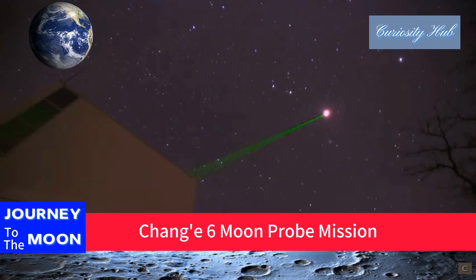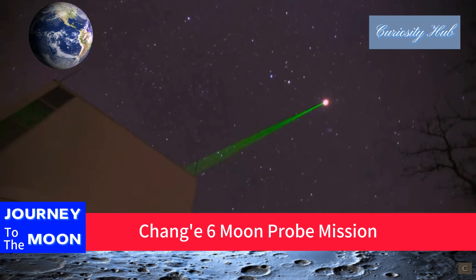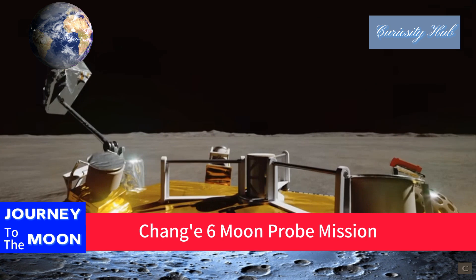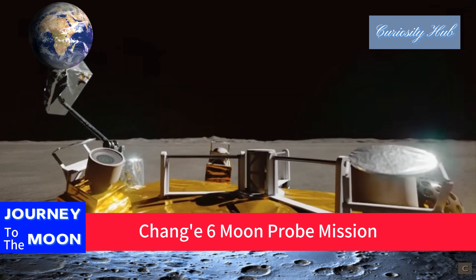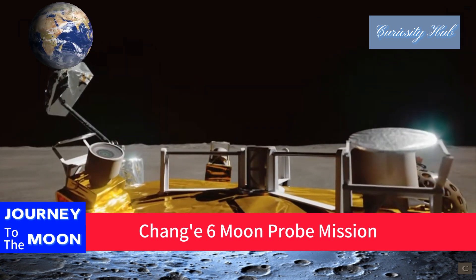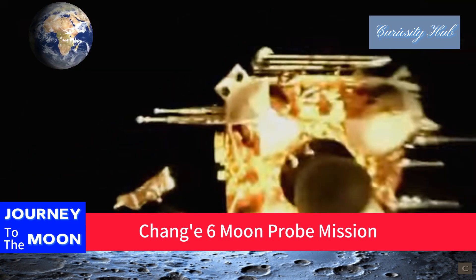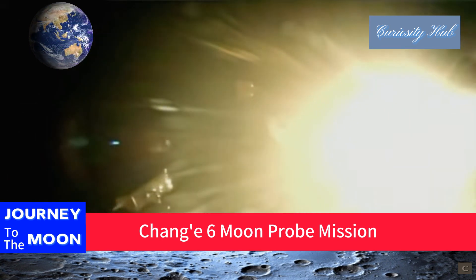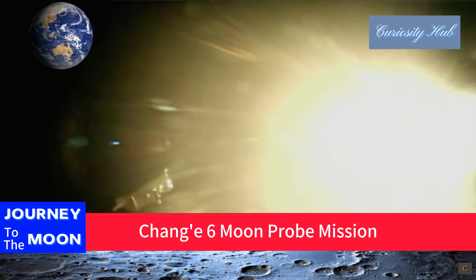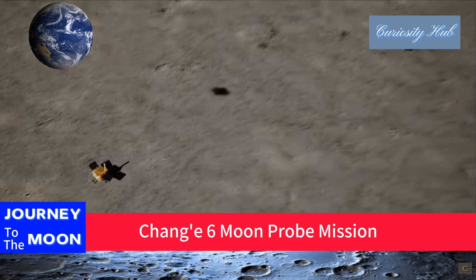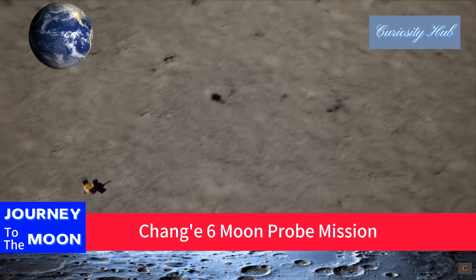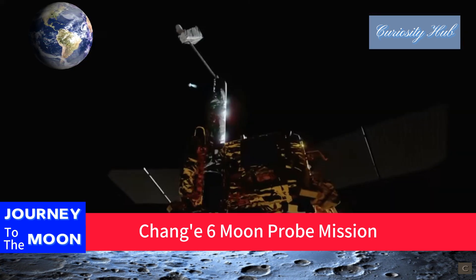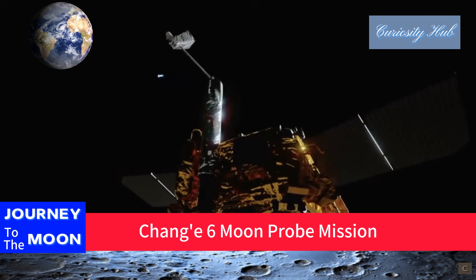Undoubtedly, Chang'e 6 carries extremely high scientific expectations. After the ascender leaves, the instruments installed on the lander will continue to work. Chang'e 3 and Chang'e 4 carried their own isotope heat sources, and Chang'e 6 should also have isotope heat sources to ensure these instruments are not frozen during the lunar night.